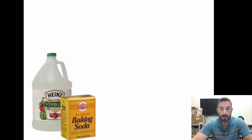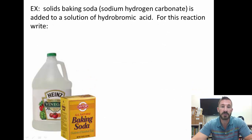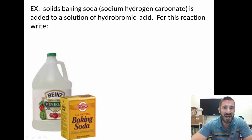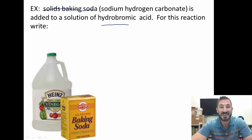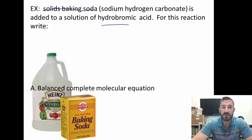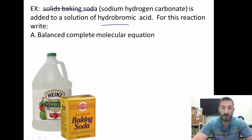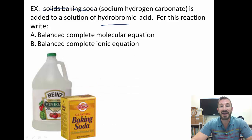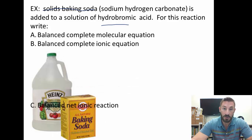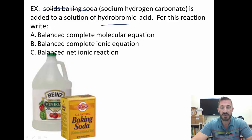Let's do one more example. This time, instead of solid baking soda, we're going to use a baking soda solution — dissolve it in water — and add it to a solution of hydrobromic acid. We're going to write the same three things: the complete molecular equation, the complete ionic equation, and the balanced net ionic reaction.